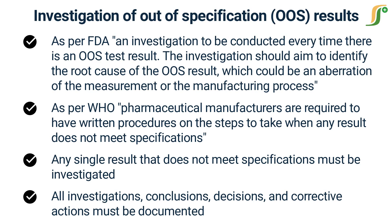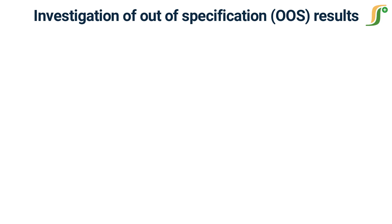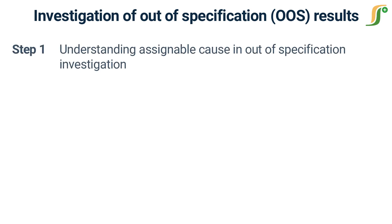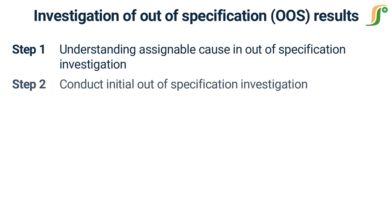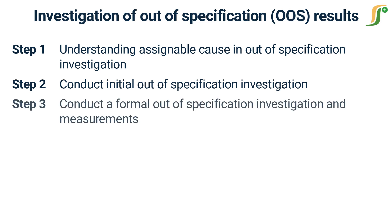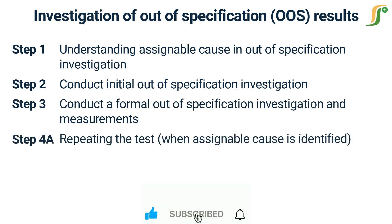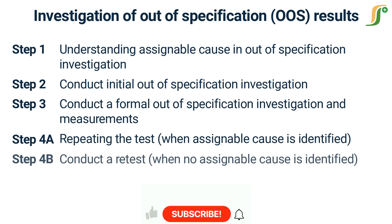Now let us understand the procedure for the investigation of OOS results. Investigation of out-of-specification results can be conducted in four steps. In the first step, we need to understand assignable cause in out-of-specification investigation. In the second step, an initial out-of-specification investigation is conducted. In the third step, a formal out-of-specification investigation and measurement is conducted. In the fourth step, if an assignable cause is identified then the test is repeated, and if no assignable cause is identified then retesting of the product is conducted.